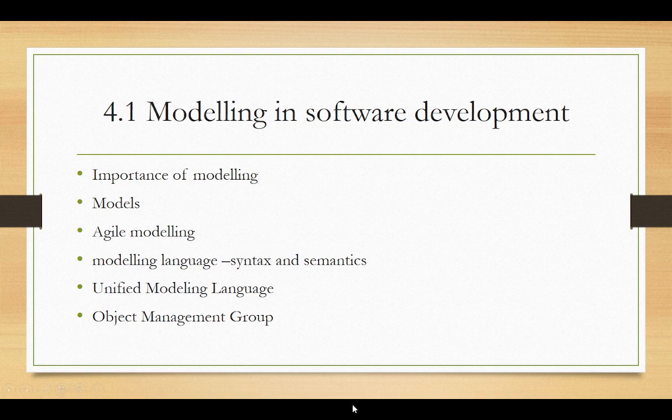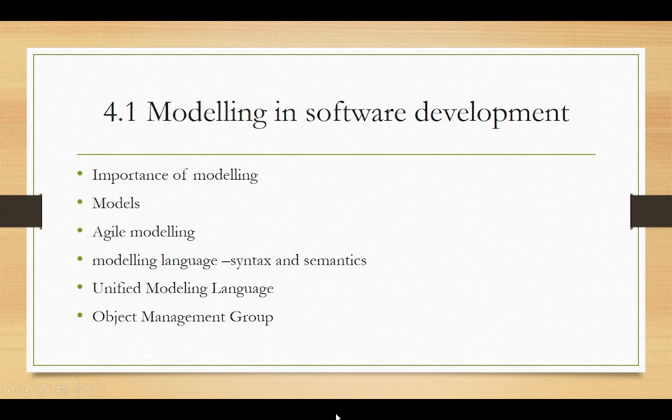In developing a software system, a developer will not use a single catch-all model. A set of related models is more likely. It would be preferable to have a consistent way of representing each of the different models for a given software system. So a modeling language will be used that allows the developer to make useful connections between those different models. In software development, a modeling language is often based on diagrams and their construction, meaning, and use. There are two sets of rules within a diagram-based modeling language. First one is syntax: it determines what diagrams exist and what symbols are used on each one. And second is semantics: that determines what the diagrams and symbols mean.